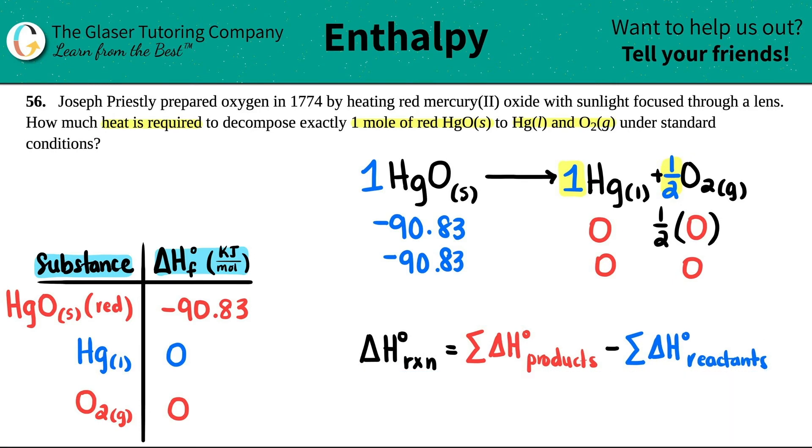But now you just keep your sides together as one number. So now I'm going to add these two together technically. So zero plus zero is just zero. And this is the same number. So negative 90.83. And now you're ready to finally do the formula. It's just the product number minus the reactant number. So the delta H for the reaction would be the products, which was zero, minus, and then the reactant was a negative 90.83.